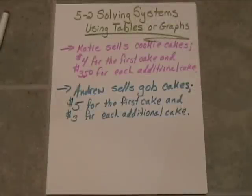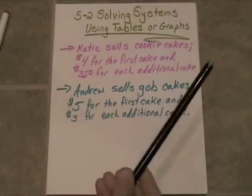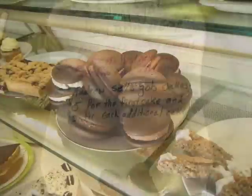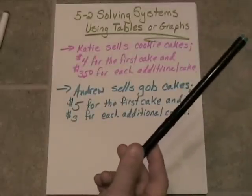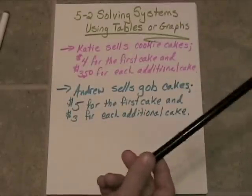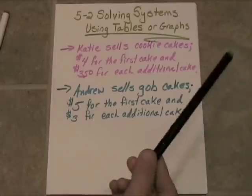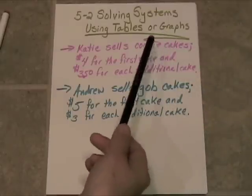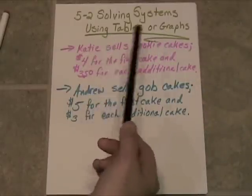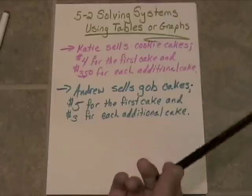Now, Andrew is Katie's competitor, and he's a shrewd little bugger. He is going to sell gob cakes. Now, gobs are those fluffy little things that have cake on the top and the bottom, and inside they're filled with cream filling. His aren't as big in diameter as Katie's, but they're three times as thick because of the gob icing inside,